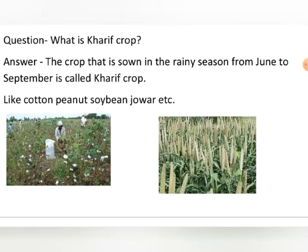It is usually summer and after summer it rains — the monsoon comes around June. This is the time when kharif crops are sown. Those crops which are sown in this period are called kharif crops. Examples include cotton, millet, soybean, and peanuts.